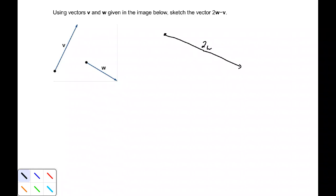Now beginning at the terminal point of that vector, I'm going to add on a minus v vector, which would be vector v with the same magnitude but in the opposite direction. This would be going down and to the left. Beginning at the terminal point of 2w, we go down to the left that same distance, that same magnitude.